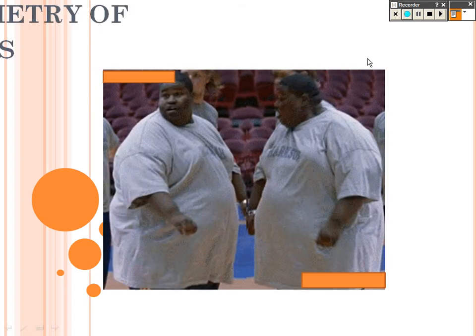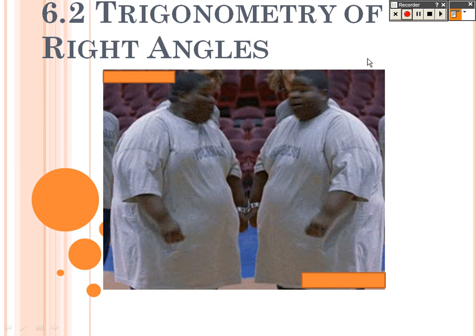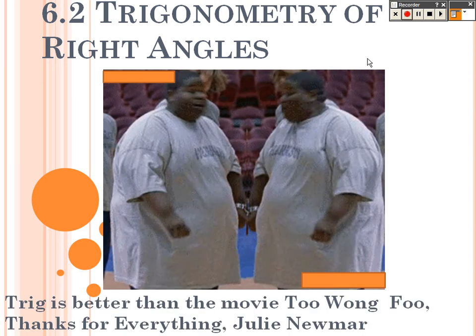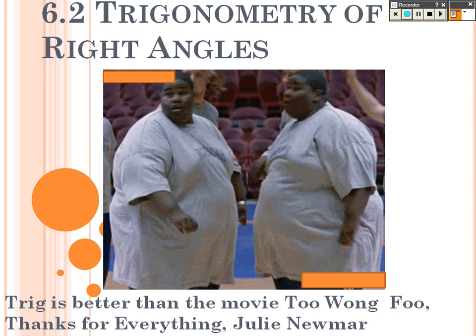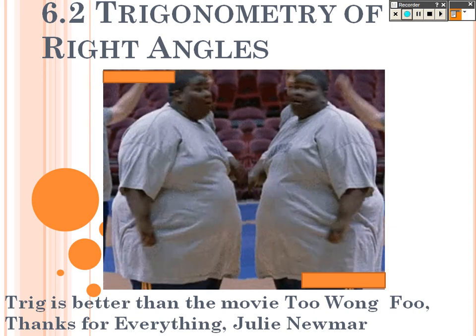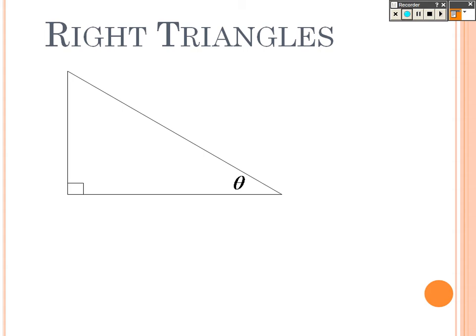All right. So we're now on 6.2. 6.2 is right triangle trig. This is stuff you learned back in geometry as well, so it should come pretty natural to you. Right triangle trig only works with right triangles, so keep that in mind.